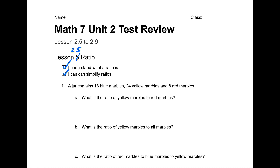So in this case, what are we looking for? We are looking for blue marbles. I've got blue marbles, yellow marbles, and red marbles. So it's blue, yellow, red at a ratio of 18 to 24 to 8. That's going to be blue to yellow to red. I might even want to put some words above it — blue, yellow, and red.